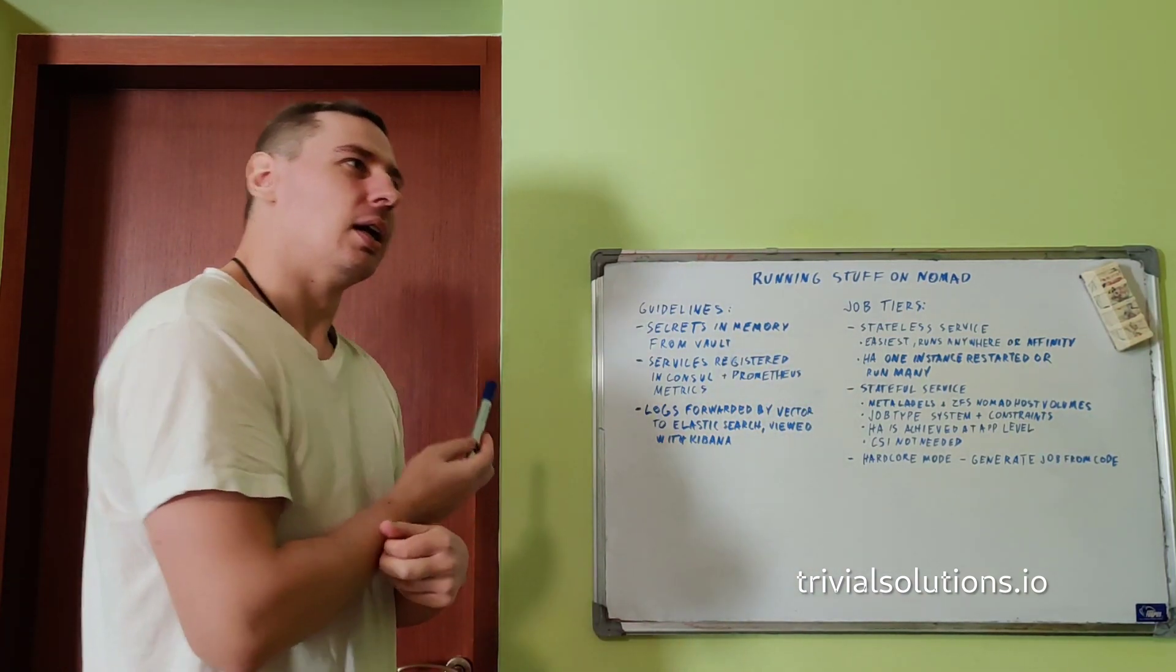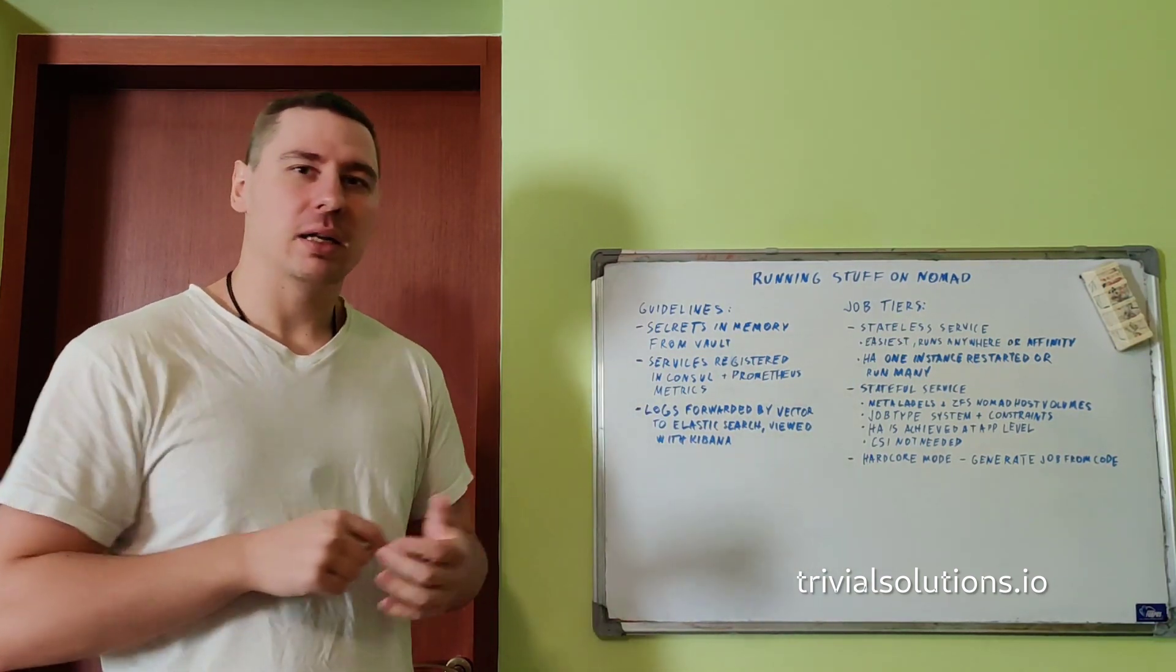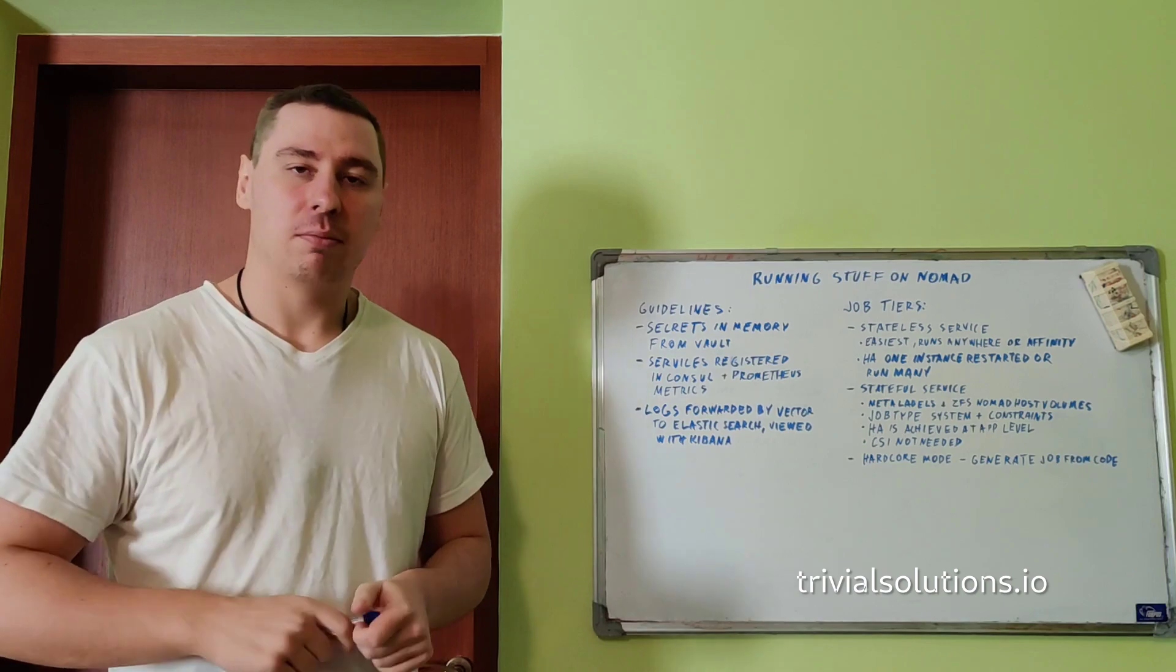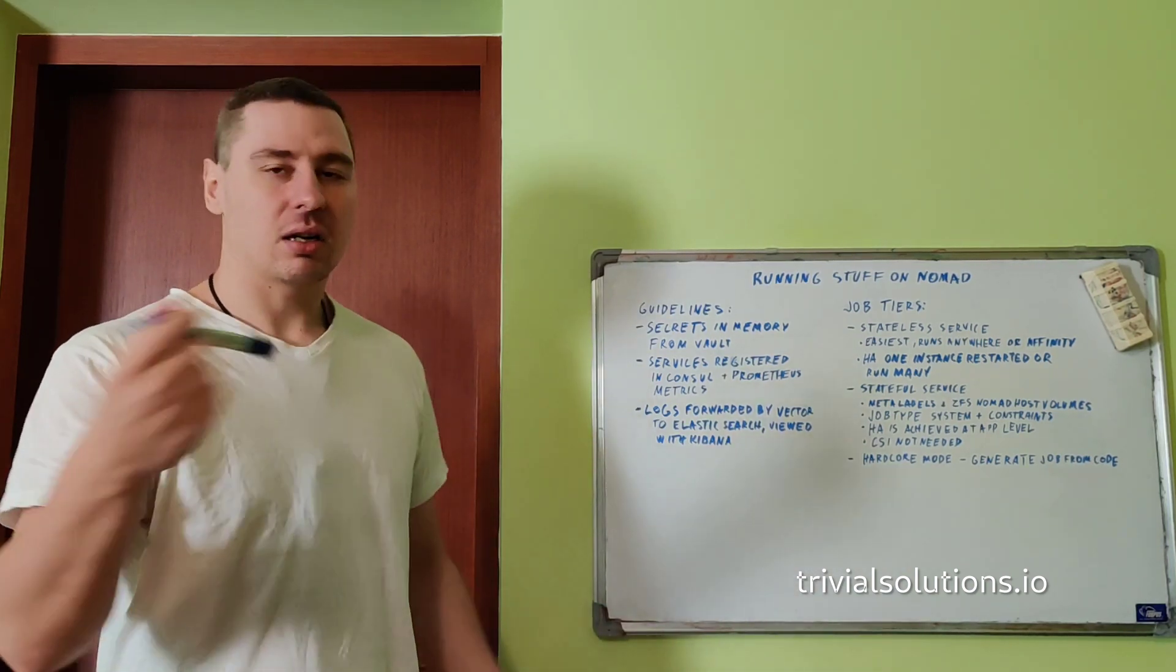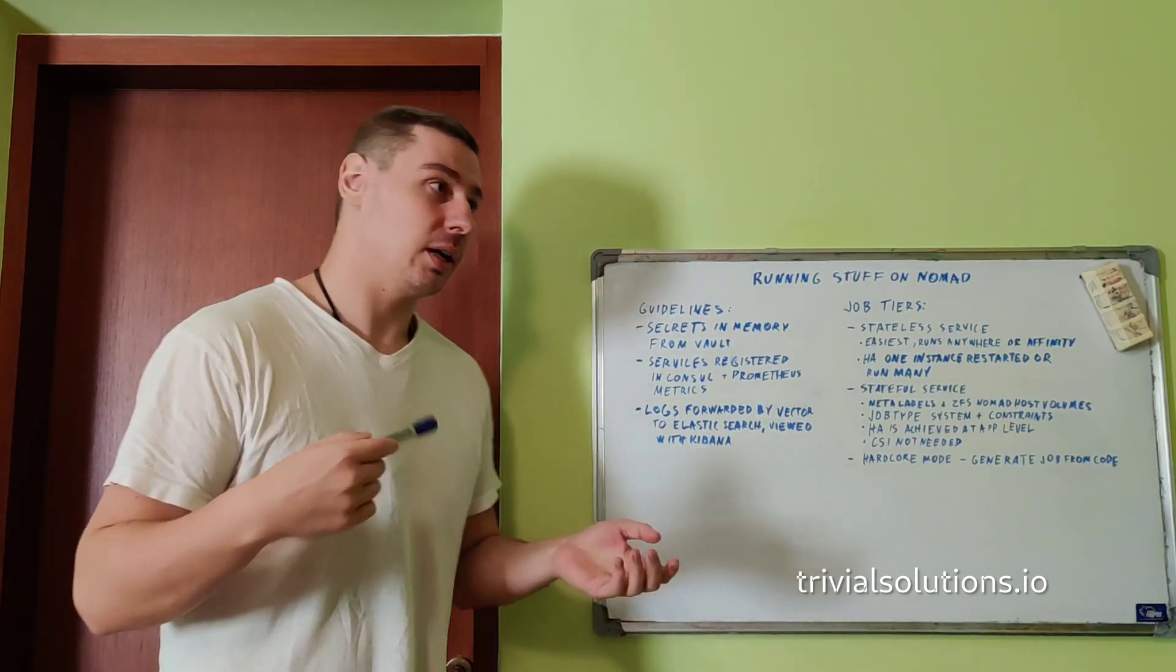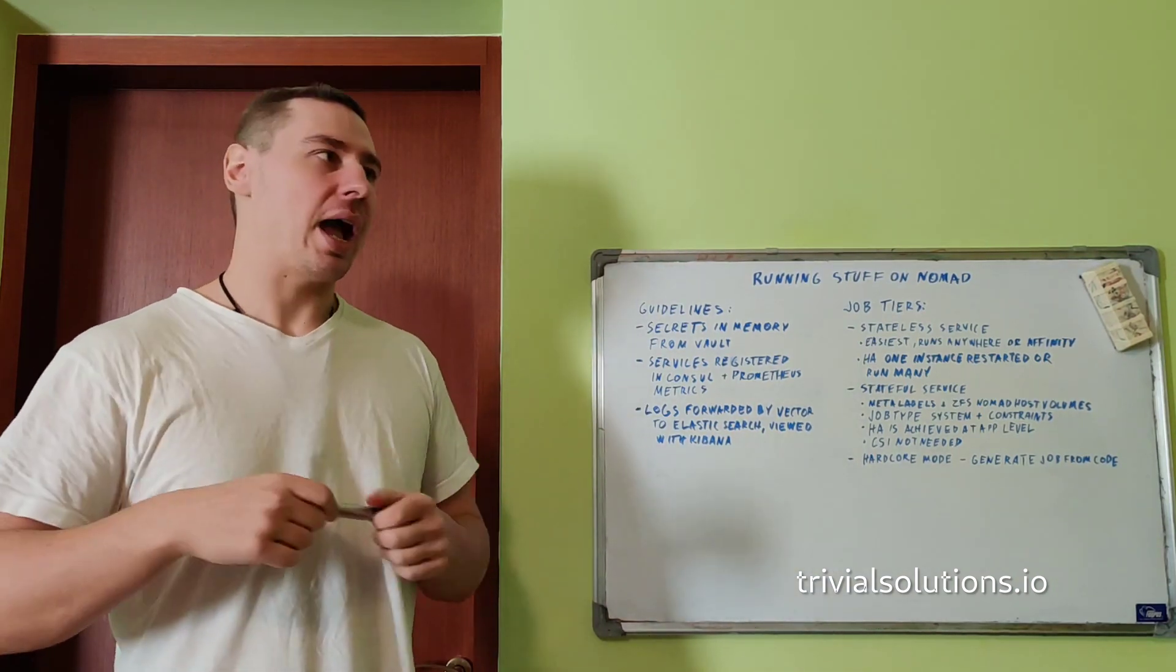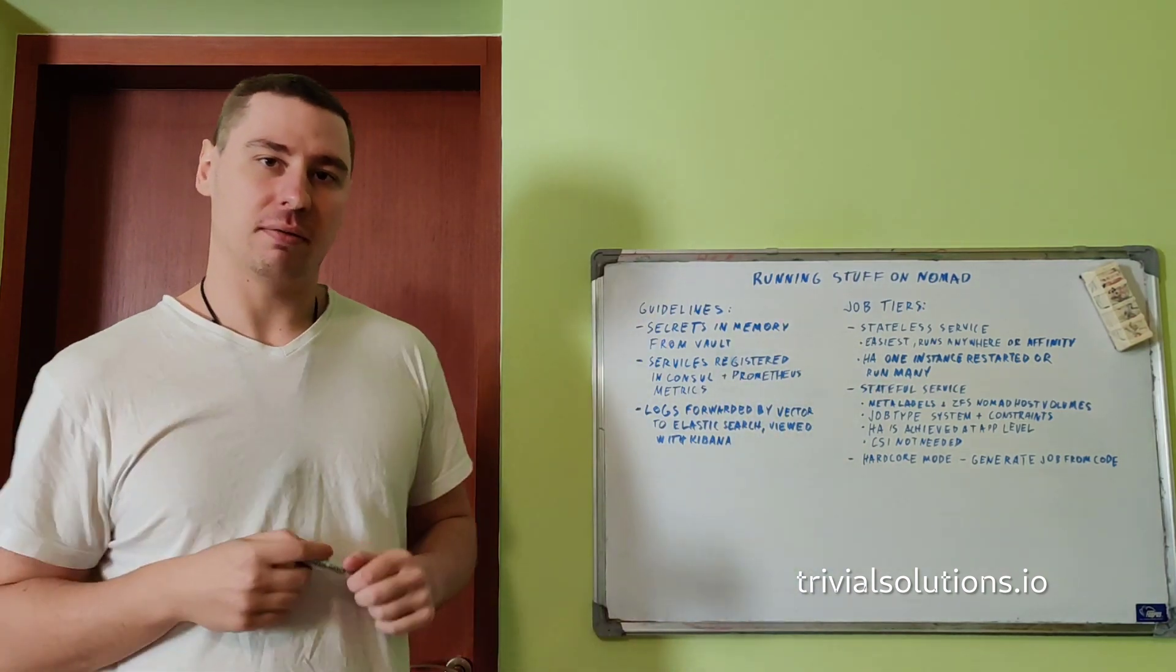But there is other stuff that we need to do, like monitoring and alerting. But I figured these depend on running stuff on Nomad because, for instance, Prometheus, Grafana, Elasticsearch, these are system components but I run them on Nomad. So it's good to know the general guidelines of how to run stuff before we actually run it.